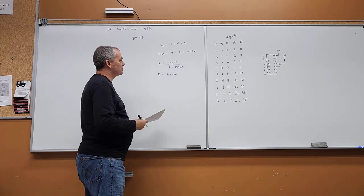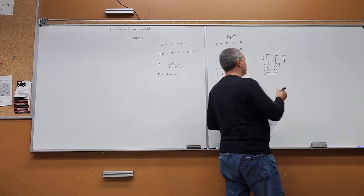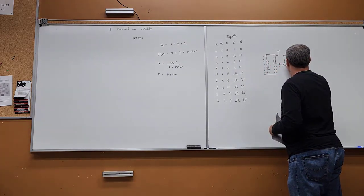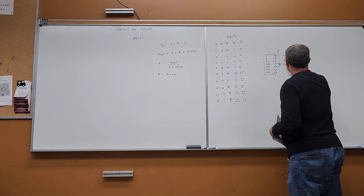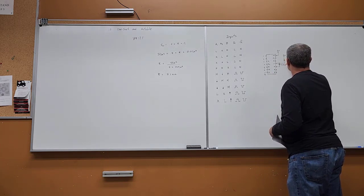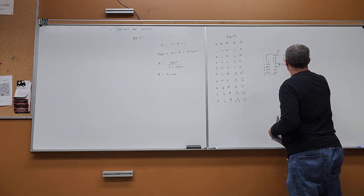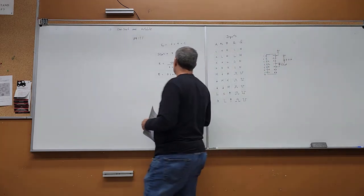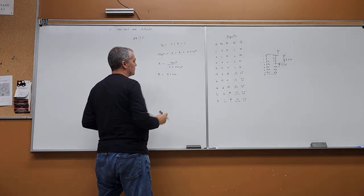So the capacitor is going to be 0.01 microfarads and the resistor is going to be around 7.1 kΩ. That will give you a pulse width of 50 microseconds.